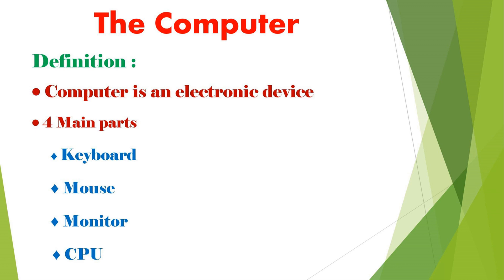Could you understand, children? A computer is an electronic device. Why is it called an electronic device? Because the computer runs with the help of electricity. There are four main parts: keyboard, mouse, monitor, and CPU.